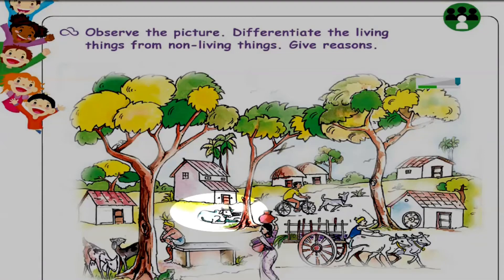Children, what is this? Yes, this is a cow. Does it grow? Yes, it will grow. Does it breathe? Yes, it will breathe. Does it move? Yes, it will move from one place to another place. Does it produce young ones? Yes, it will have young ones.